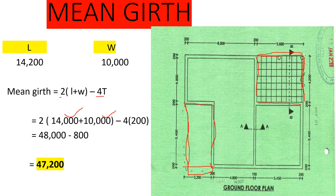To get the mini gut, the formula is 2 into (length plus width), then minus for the corners due to wall thickness. Our length is 14,000 and width is 10,000. Adding them gives 24,000, multiplied by 2 gives 48,000. We then minus 800 for the corners, giving us 47,200. So in meters, that is how you calculate your mini gut.